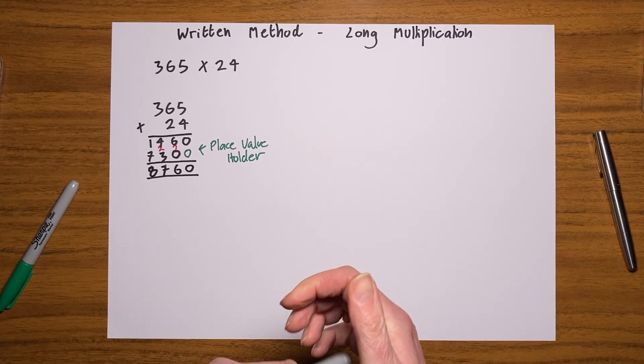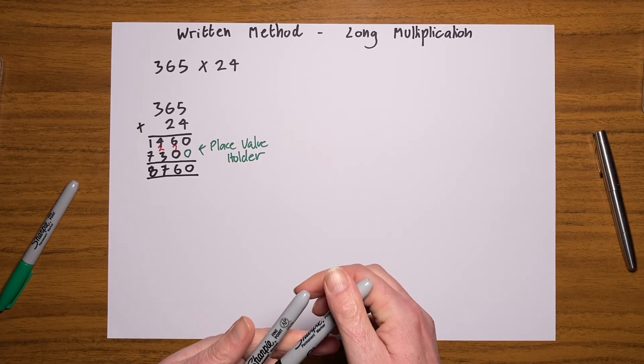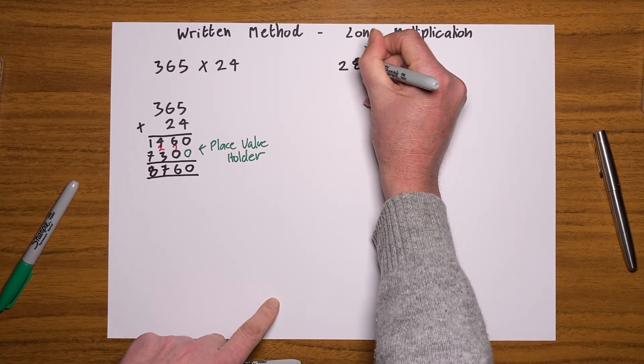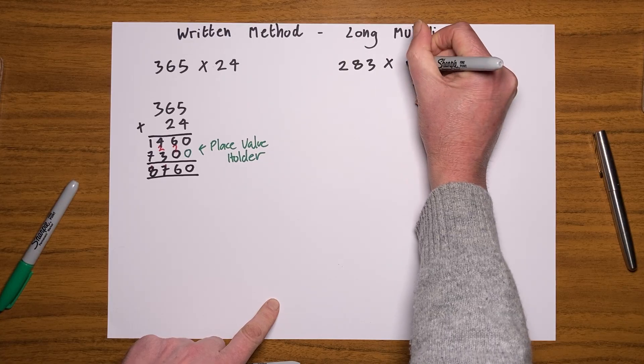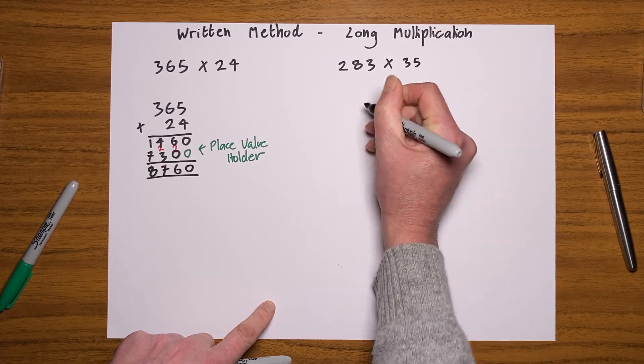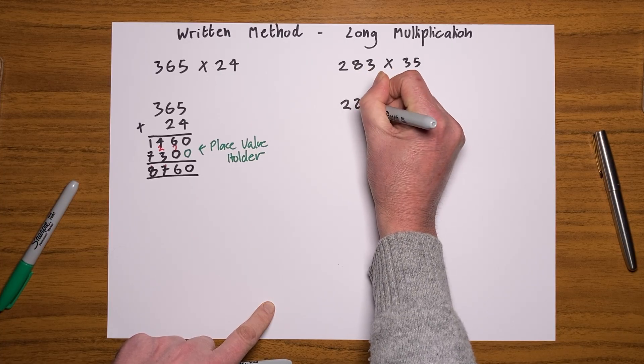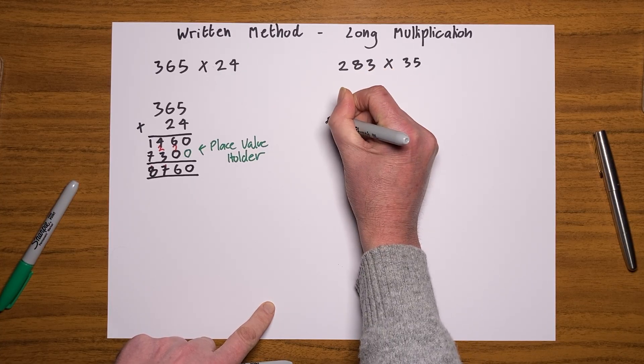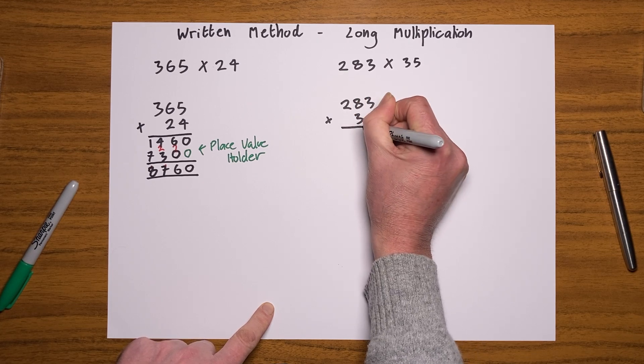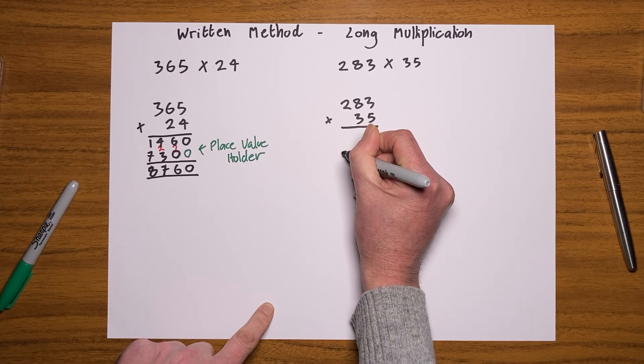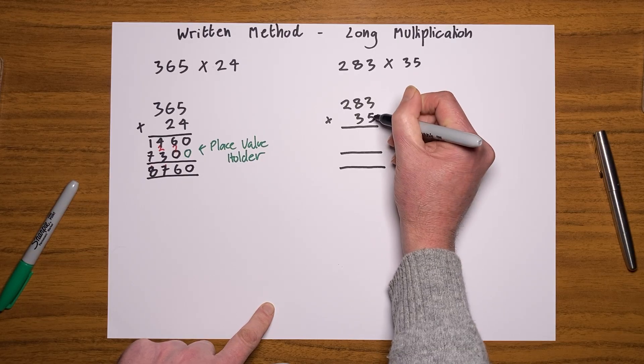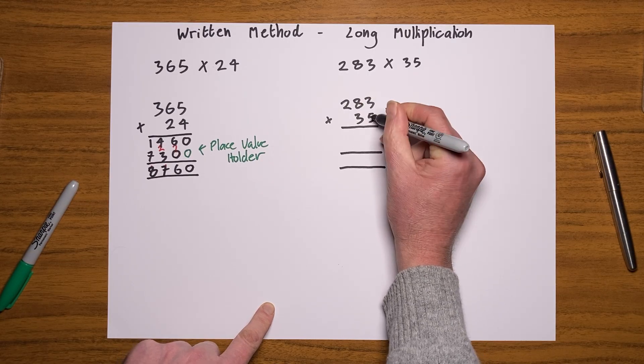All right, I'm going to do another one for you, so let's just choose a random number. Let's do 283 times 35. So let's set it out correctly. 283 multiplied by 35, make sure I've allowed enough space to do my lines of working, and let's go for it.